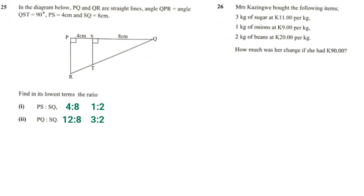So at first we're told she bought 3 kg of sugar at 11 kwacha per kg. So we're going to write 11 kwacha, then we're going to multiply it by 3 because she bought 3 kg when 1 kg was sold at 11 kwacha. So she bought 3 kg, so we're going to say multiply by 3, then plus 1 kg of onion is 9 kwacha. So we're going to say plus 9 kwacha. Then plus 2 kg of beans is sold at 20 kwacha, so she bought 2 kg. So we're going to say 20 kwacha by 2.